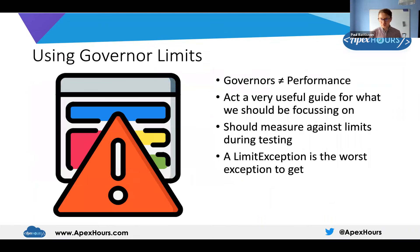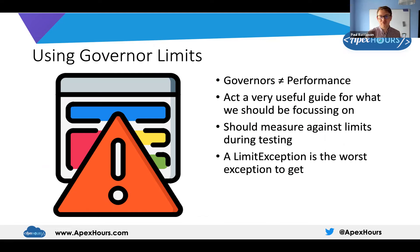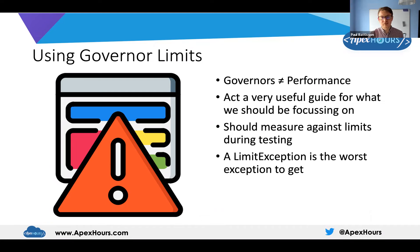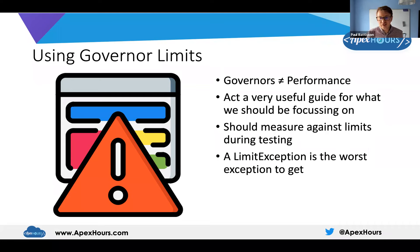Governor limits are not equal to performance, but they act as a very useful guide for what we should focus on. My key piece of advice is: as you are testing your system — whether in UAT or systems integration testing — measure against the limits during that testing. As users are doing their job, run debug logs, enable some reporting, and find out how your system is performing under load. Do a data load, run an integration — see what happens. The big reason is that if things are going to break, you want to know about it and be able to take measurements then.